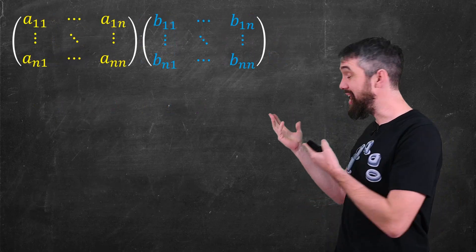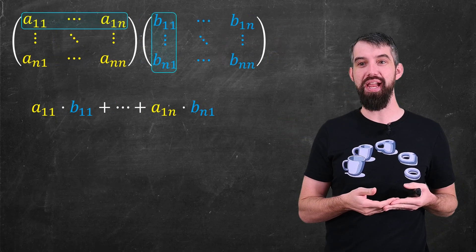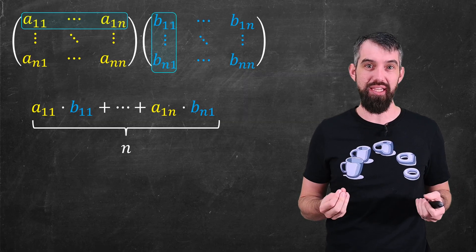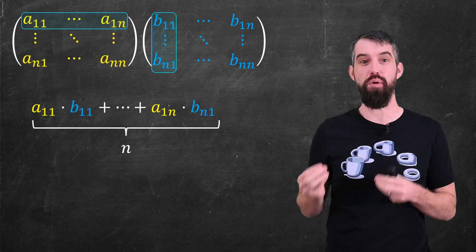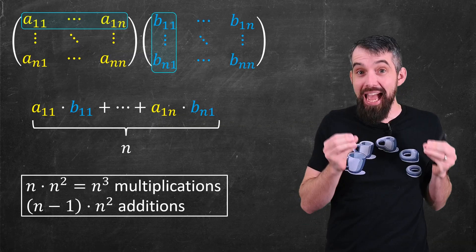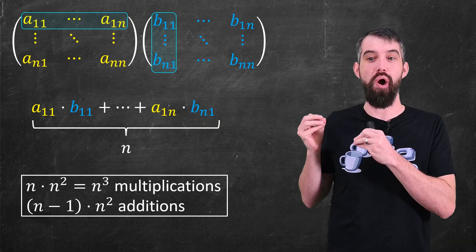If instead of 3x3 I had an nxn matrix that I was multiplying, then the number of multiplications to get any particular entry is just going to be n different multiplications. Multiply that by the n squared number of entries, and I get n cubed multiplications that are required.